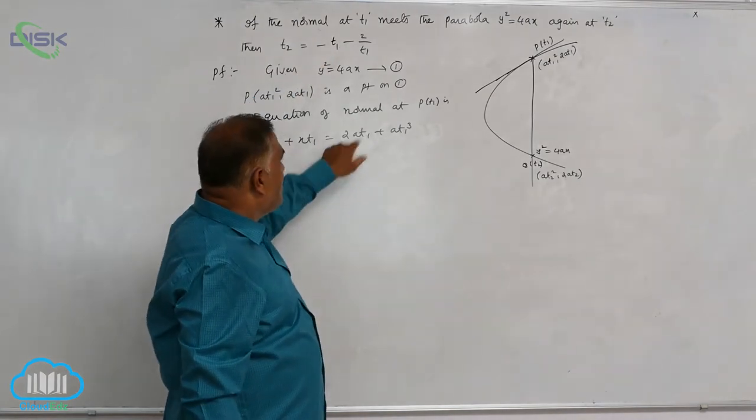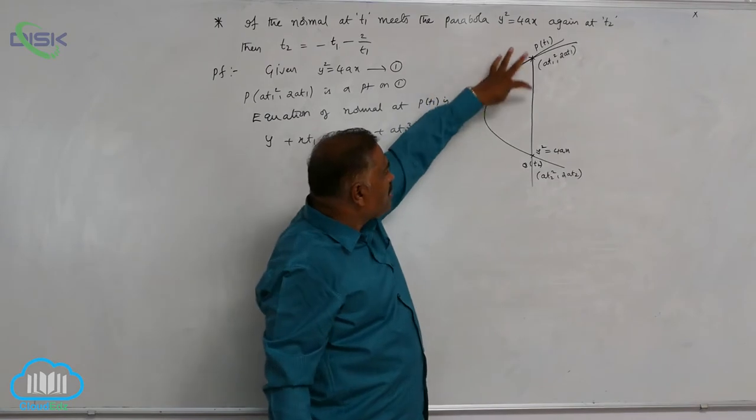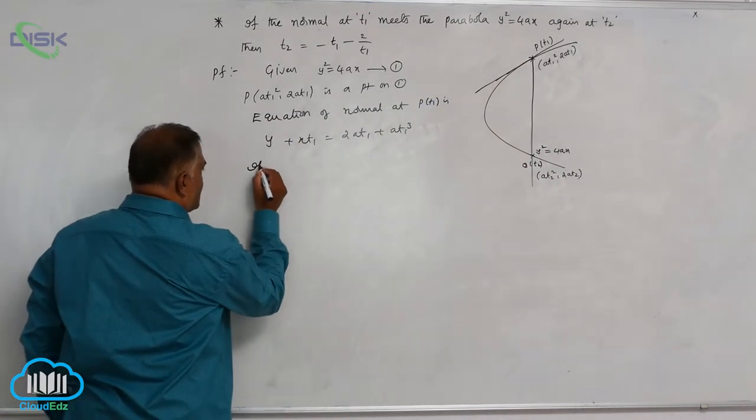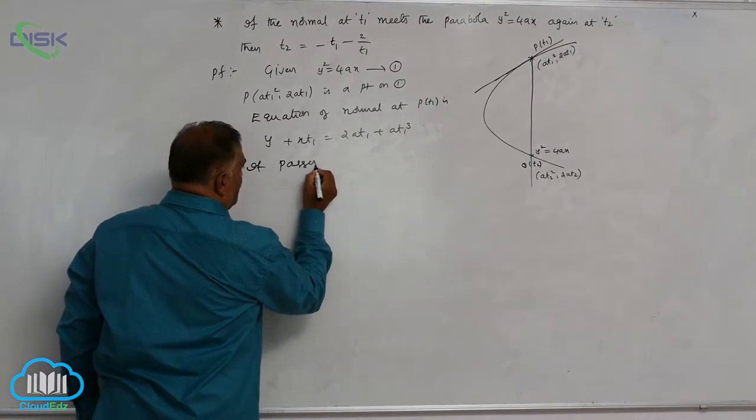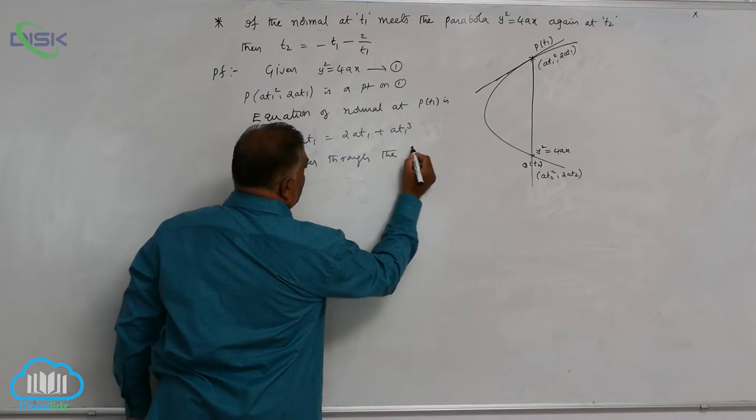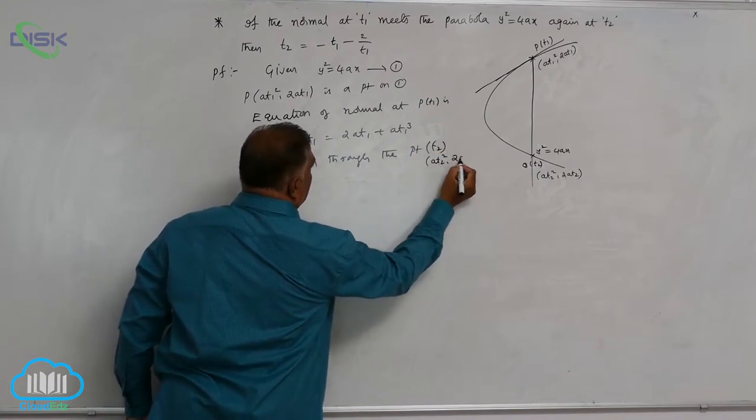Normal at T1 again meets at T2. That means this normal passes through the point T2, which means (AT2², 2AT2).